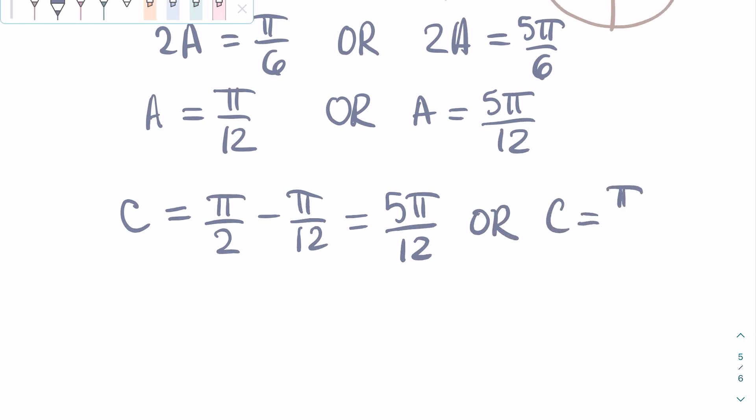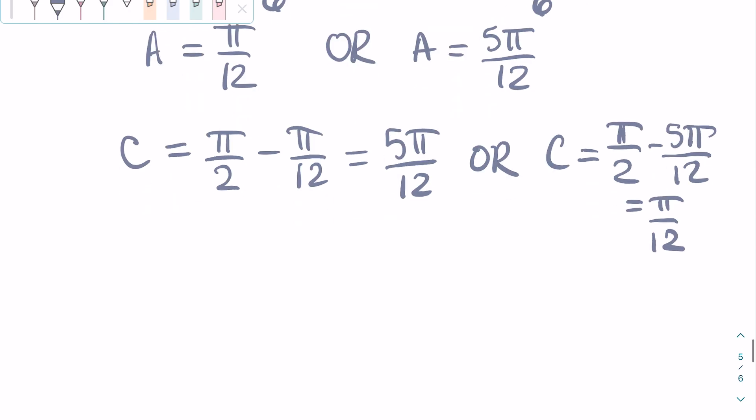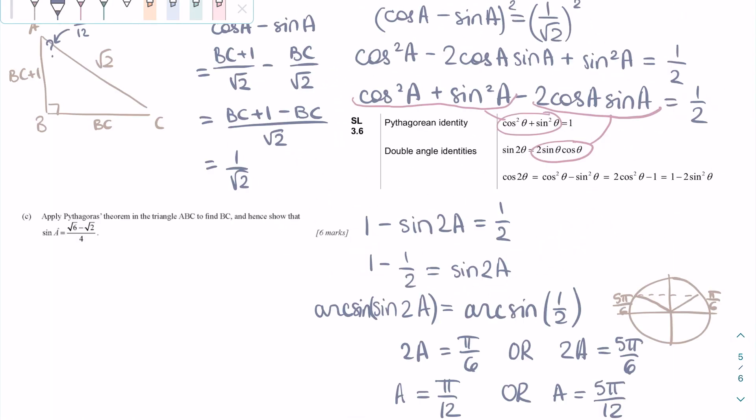If one angle is Pi over 12, that means the other has to be 5 Pi over 12, since it is a right angle triangle. So, that means the answer to part B is the angles in the triangle are Pi over 12, 5 Pi over 12, and Pi over 2, or 90 degrees.